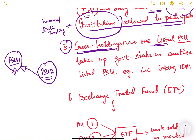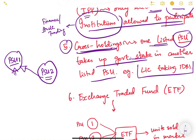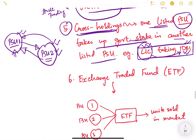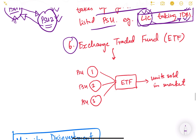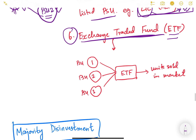The fifth method is cross holdings. Here, one PSU (Public Sector Undertaking) invests into another PSU. Basically, one listed PSU takes up the government's stake in another listed PSU. An example is LIC taking up a stake in IDBI — IDBI was a government bank, and LIC, being another government company, acquired shares in IDBI, thereby giving money to the government.